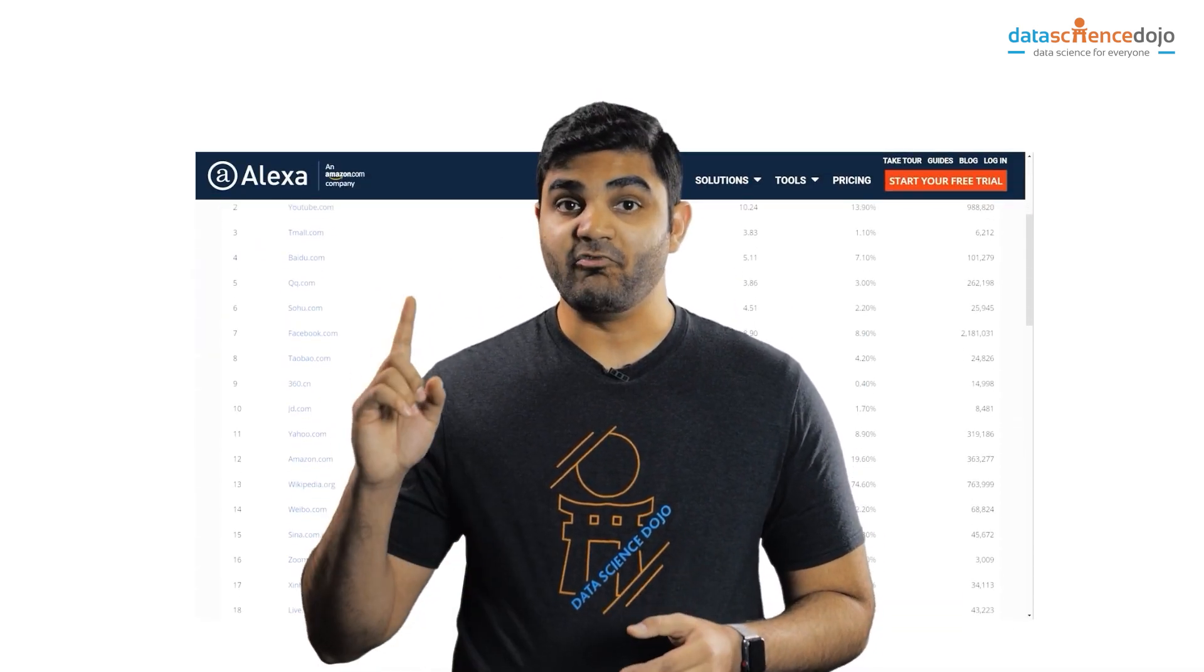So huge companies like Amazon and Fiverr have the lowest ranks. Most websites compete to become part of the top 1 million.